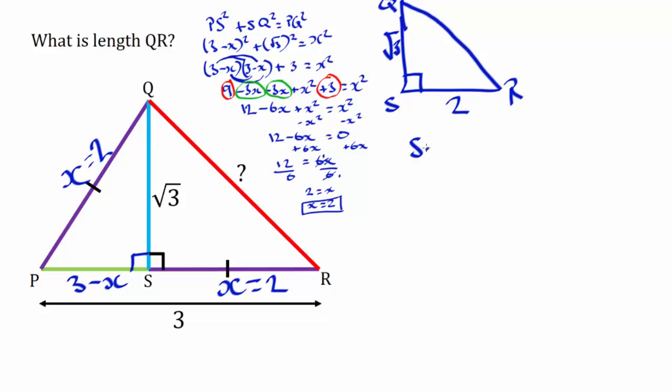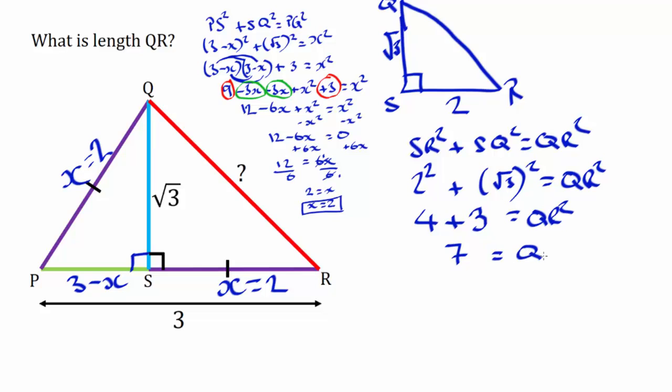So we'll do SR squared add SQ squared equals QR squared. So we've got 2 squared add root 3 squared equals QR squared. So that's obviously 4. We've already seen that squaring the square root cancels itself out. So we've got 4 add 3 equals QR squared. So that's basically 7 equals QR squared.